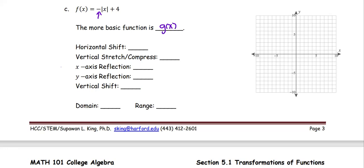The more basic function is g(x) = |x|, the absolute value function, which is the graph in V-shaped form. For horizontal shift, since inside is just x...